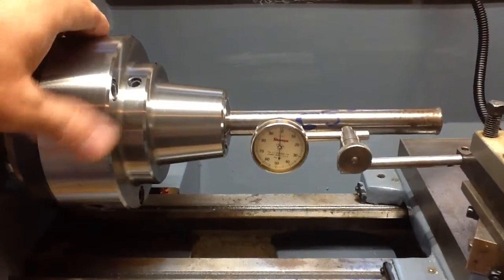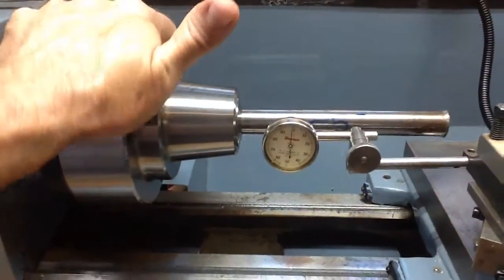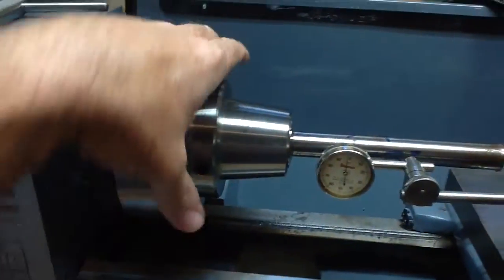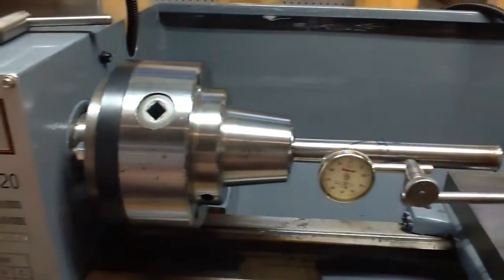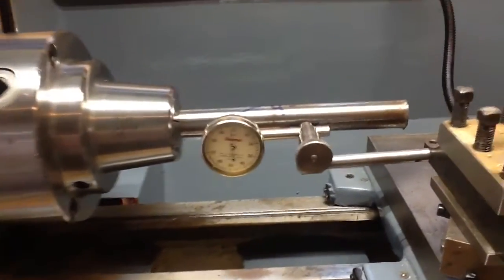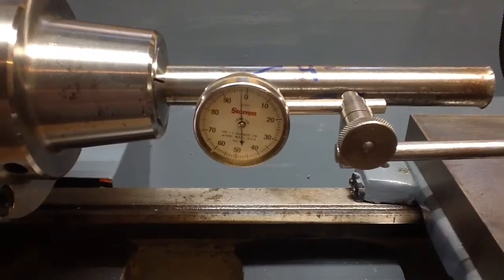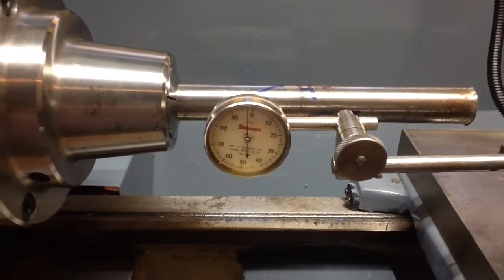Maybe, you know, one thousandth under on that side. I think it got to a maximum of two thousandths under, because I was thinking about taking this all apart and machining the back. Yeah, there we go, two thousandths, just a shade over two thou.